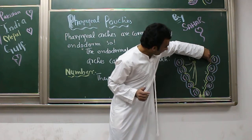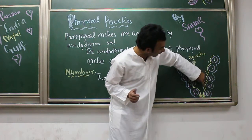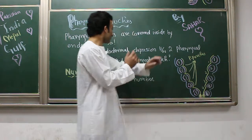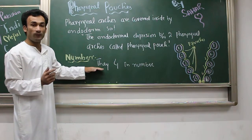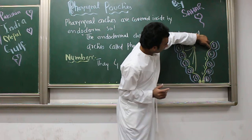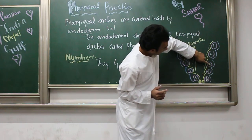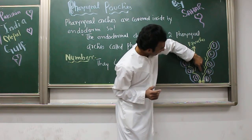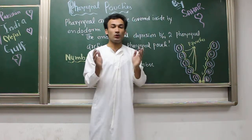You can see here the endodermal depressions between the pharyngeal arches — these are called pharyngeal pouches. There are four pharyngeal pouches. Between the first and second arch is the first pharyngeal pouch, between second and third is the second, between third and fourth is the third, and between fourth and sixth is the fourth pharyngeal pouch.